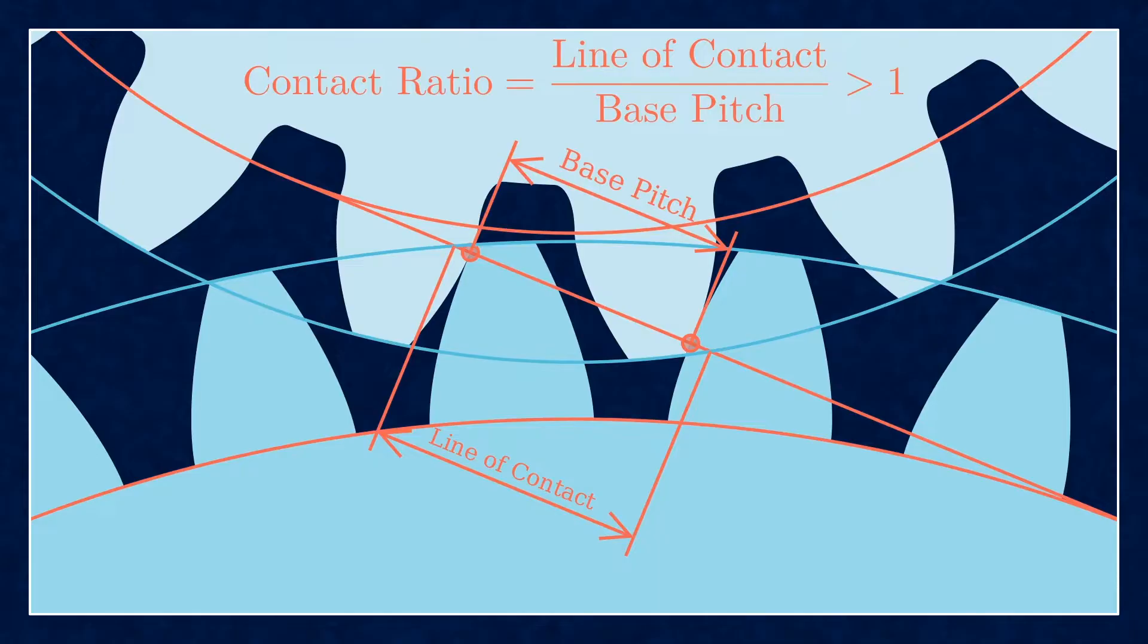The distance between the contact points along the line of action is the base pitch. The contact ratio is the ratio between the line of contact and the base pitch. For a pair of gears to work, it is necessary that the contact ratio is larger than one.